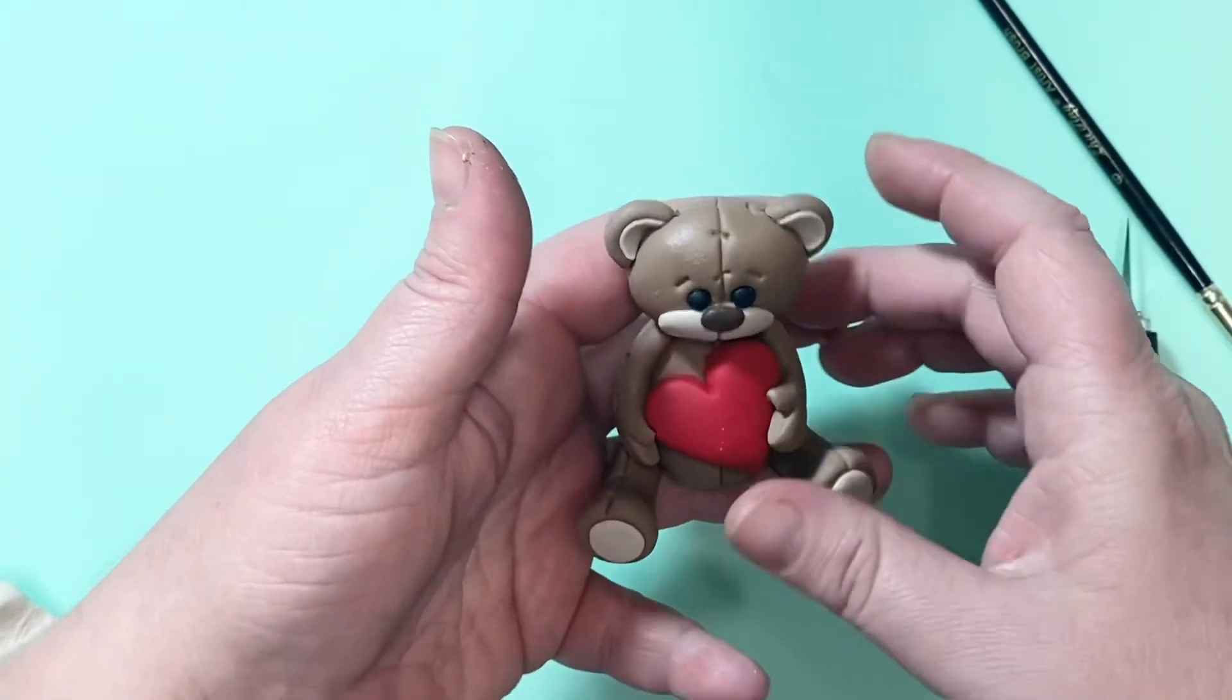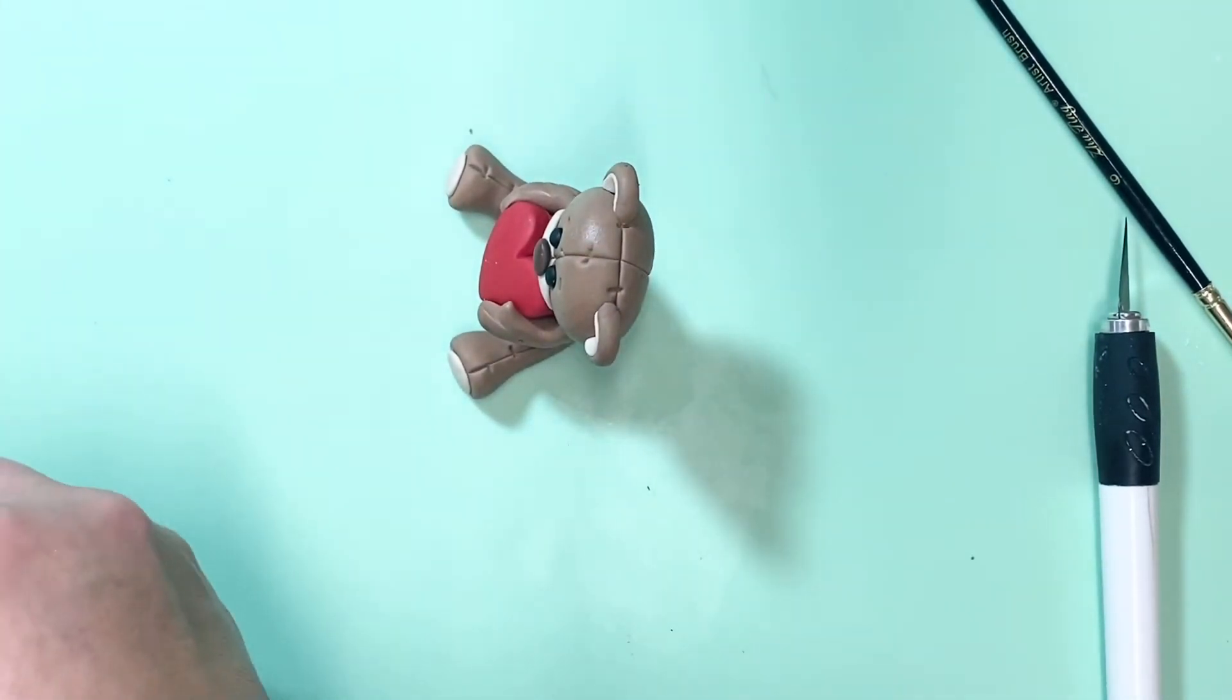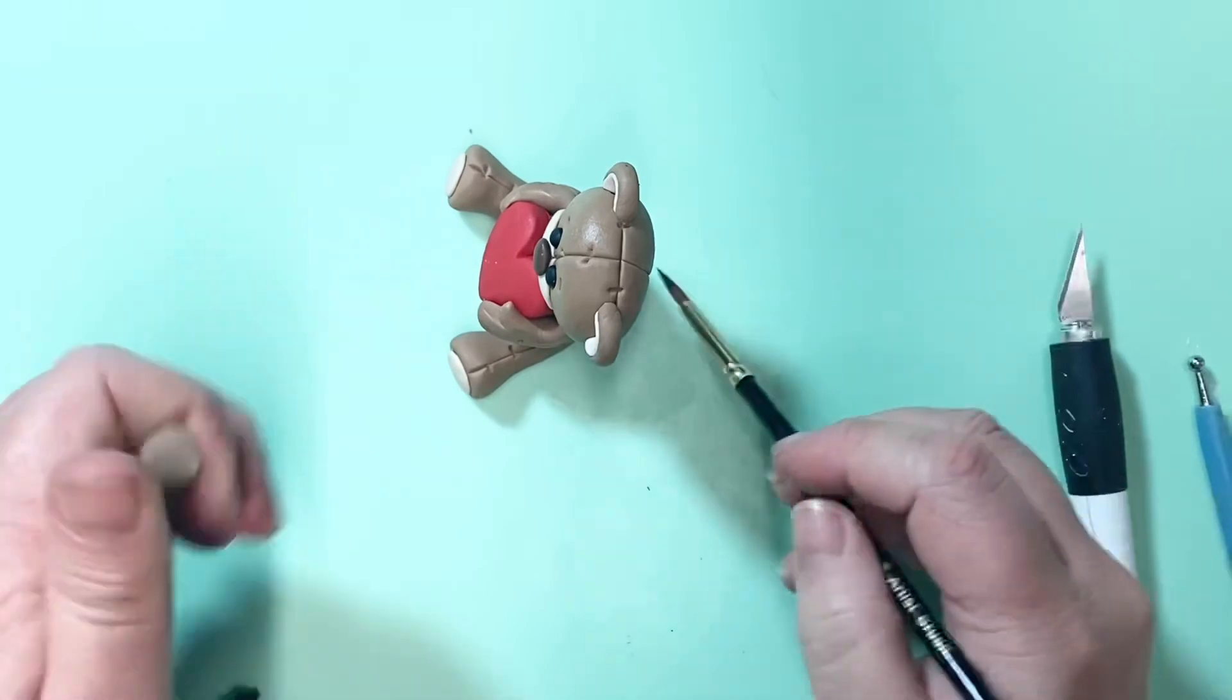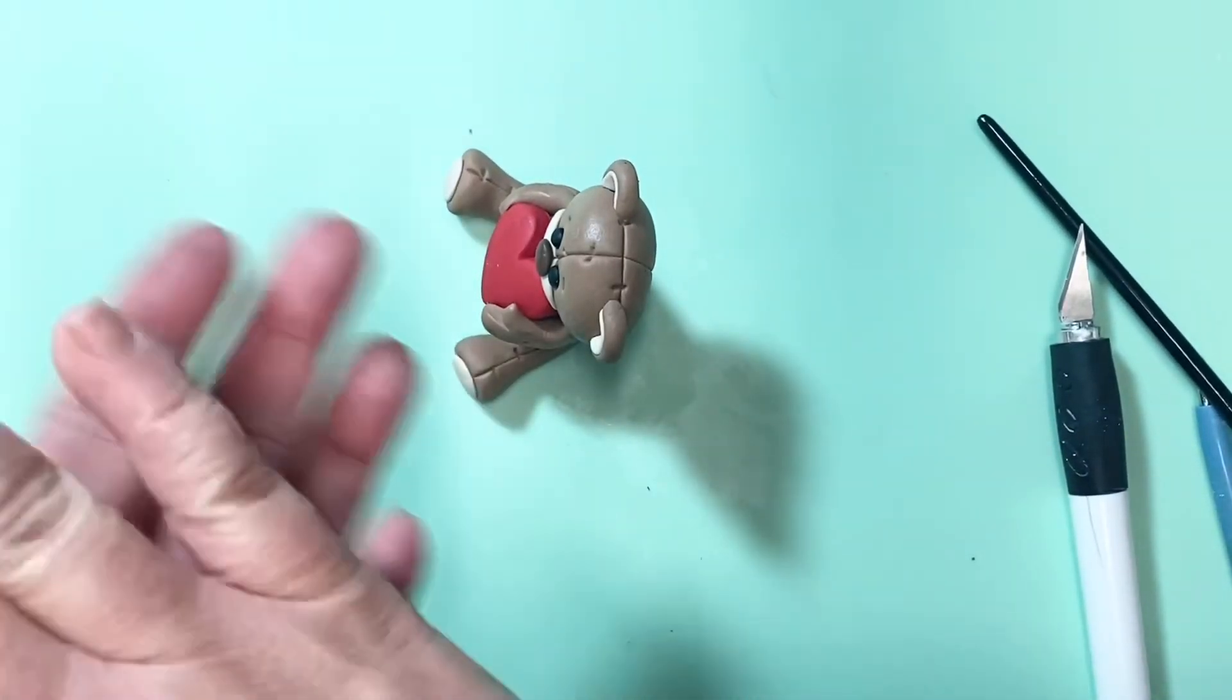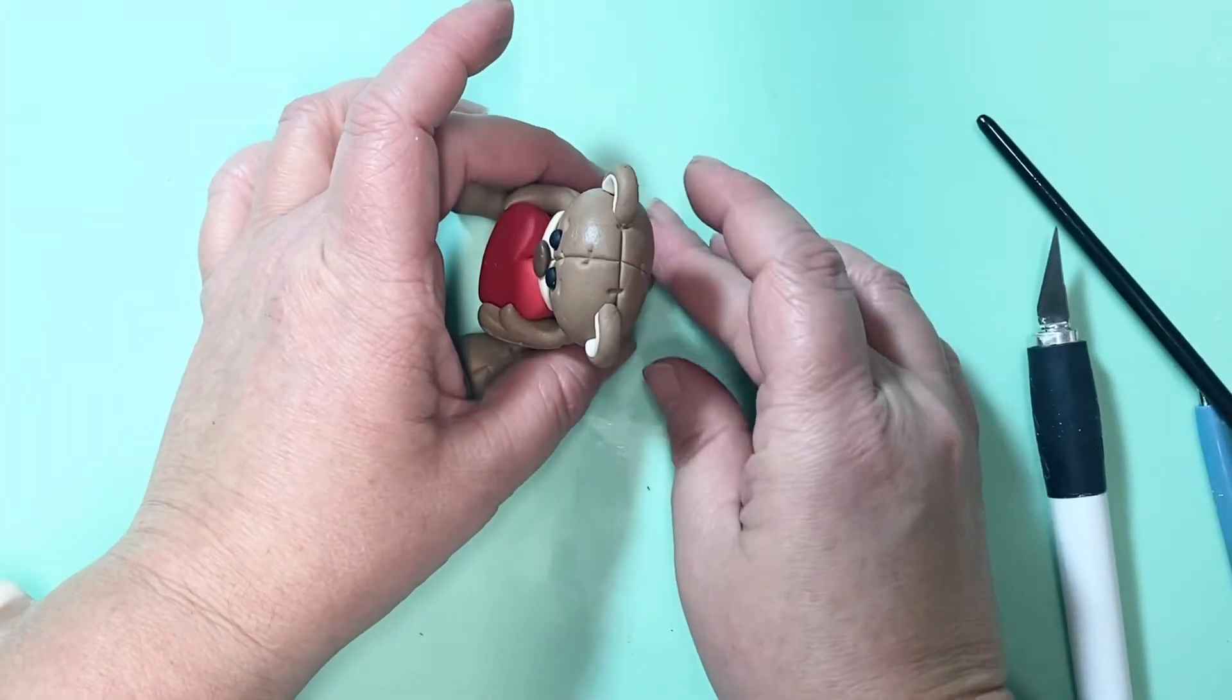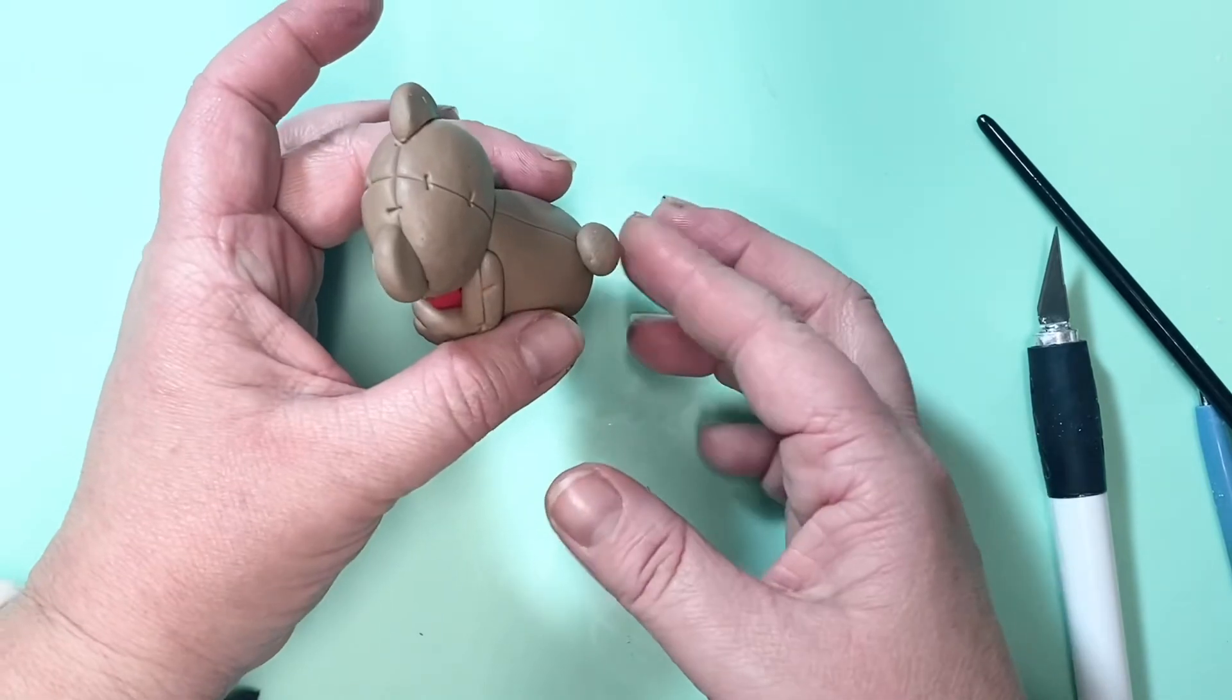Now all you need to do is you need to add a tail onto the back of him. So again, get the same color brown. I suppose you could also get a different color if you wanted to. And just roll a ball from paste and stick it on the back of him to complete the bear. Nice and easy, all done.